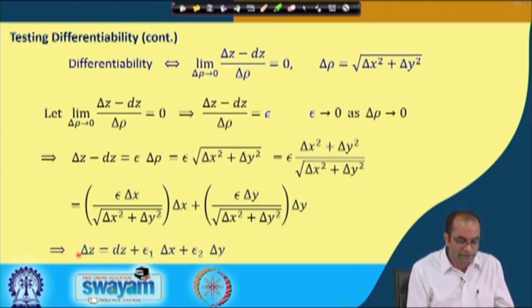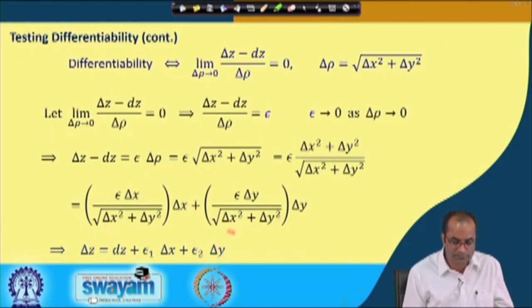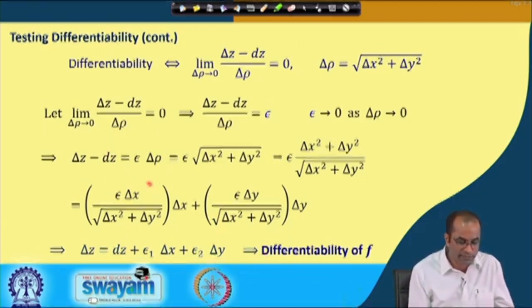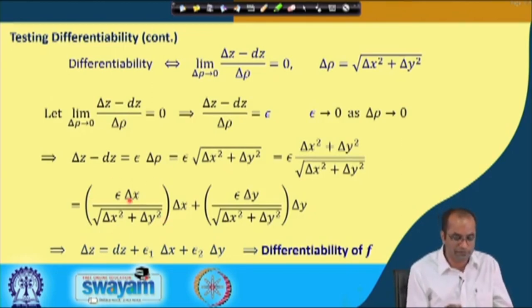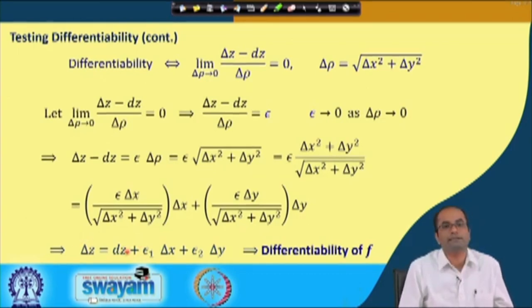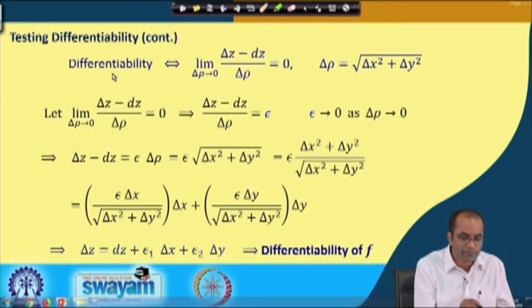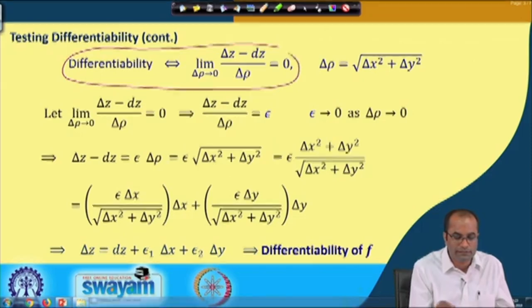We observe that delta z can be written as dz + epsilon_1·delta x + epsilon_2·delta y, which is precisely the definition of differentiability. So we have shown both directions: differentiability implies the limit equals 0, and the limit equaling 0 implies differentiability. These are equivalent definitions for testing differentiability.